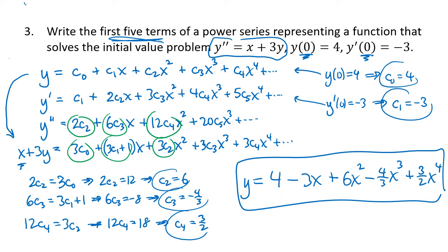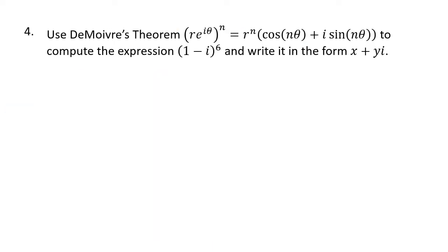For these kinds of problems, use initial values to get the first coefficient, set up a power series for both sides of the equation, then equate coefficients of equal powers of x. Something else from this section is how power series let us think about complex numbers differently. Using the power series for the exponential, sine, and cosine, we get DeMoivre's theorem, which allows us to find powers of complex numbers using trigonometry and geometry.